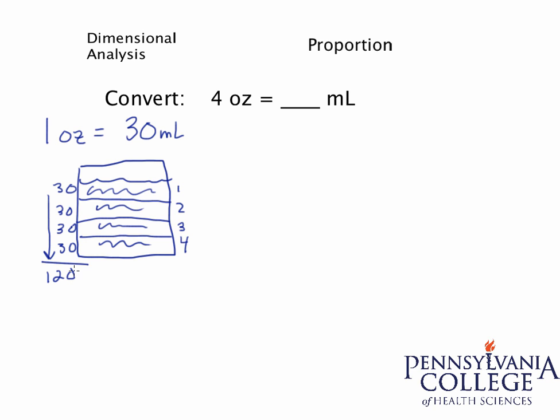I know that's very quick. We didn't do any sort of multiplying or use a proportion, but it's just visualizing what we know about this. Each ounce contains or is equivalent to 30 milliliters. Now what I'm going to do is I'm going to erase this, and I'm going to solve this problem using dimensional analysis.